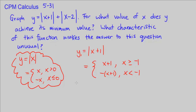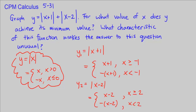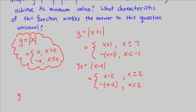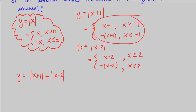And y sub 2 is defined as the absolute value of x minus 2, which has two pieces: x minus 2 when x is greater than or equal to 2, and negative of x minus 2 when x is less than 2. So we have two separate piecewise functions, y sub 1 and y sub 2, that we want to add together.